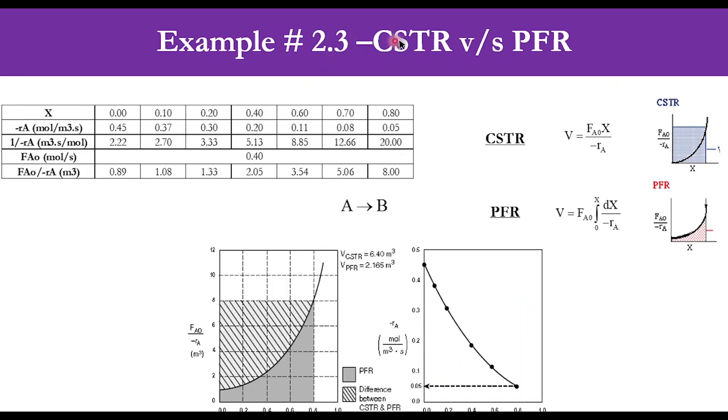This is our example number 2.3 that compares CSTR and PFR volume. CSTR V = F0 X over minus RA gave 6.4 cubic meters, while PFR gave 2.165 cubic meters. Obviously, PFR is the recommended one. This complete region represents the volume of CSTR, while the area under the curve represents the region of PFR. This extra area corresponds to higher cost for CSTR. For isothermal systems, we can say that CSTR is least applicable while PFR is better.